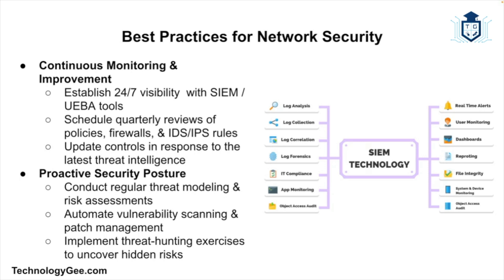Let's move on and talk about some best practices for future-proofing network security. To stay ahead of emerging threats and technologies, organizations should adopt the following best practices. The first is continuous monitoring and improvement — regularly monitor network security and update security measures to address new threats. Implement a continuous improvement process to enhance security practices and technologies.